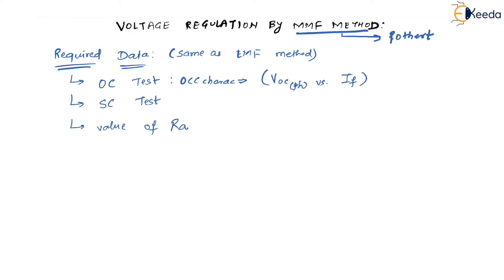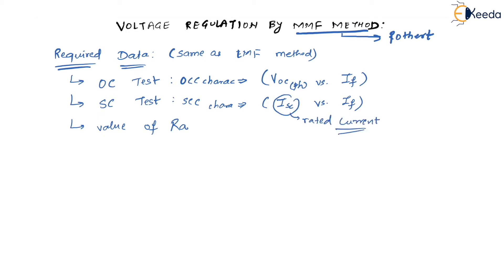The SC test gives you the short circuit characteristics, SCC characteristics, where you get short circuit current IAC versus field current IF. This IAC is generally the rated armature current. The data required is the same as the EMF method, but the steps which will be followed are going to be completely different.